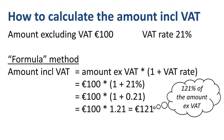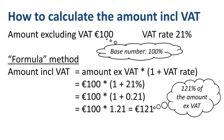The VAT inclusive amount is always more than the VAT exclusive amount, as the value added tax increases the price to the consumer. The amount excluding VAT is the base number in the calculation — we assign it the value of 100%. Then 100% plus 21% is 121%.